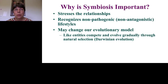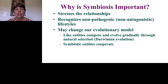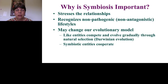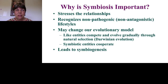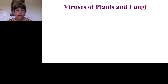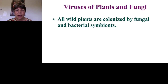Symbiosis also affects our evolutionary model. Most people are familiar with Darwinian evolution, where like entities compete and evolve gradually through natural selection — a very powerful force — but not necessarily the only force. Symbiotic entities must cooperate. When Darwin was developing his theory, symbiosis wasn't even known, and when recognized it was thought to be odd and not common, so it was never really incorporated. Symbiosis also leads to symbiogenesis — speciation through fusion — which has occurred in virus-host interactions too.